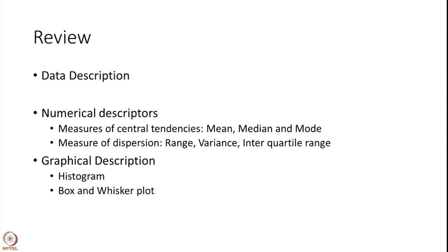We presented some of the measures of giving such description. One of them is numerical descriptors such as measures of central tendency — mean, median, mode, etc. Then we also described the measure of dispersion which includes range, variance, interquartile range, etc. These are all numerical descriptors.